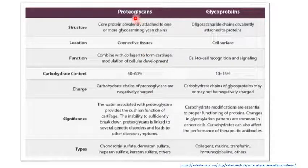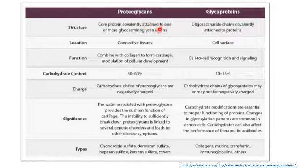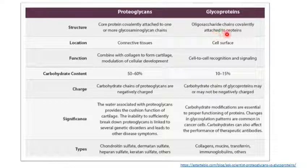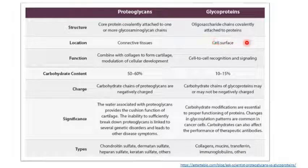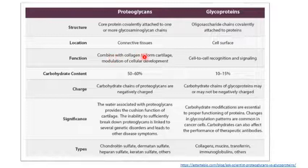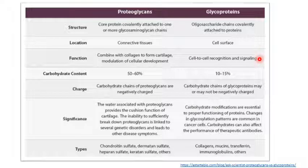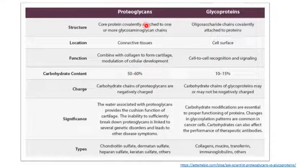Let us look at the difference between proteoglycans and glycoproteins, which can often be confused. Proteoglycans are core proteins covalently attached to one or more long glycosaminoglycan chains, while glycoproteins have short oligosaccharide chains covalently attached to proteins. Proteoglycans are mainly seen in connective tissue, while glycoproteins are seen on cell surfaces — as we already discussed regarding the plasma membrane, where they are found on the outer surface. Proteoglycans combine with collagen to form cartilage, while glycoproteins help in cell-cell recognition and signaling.